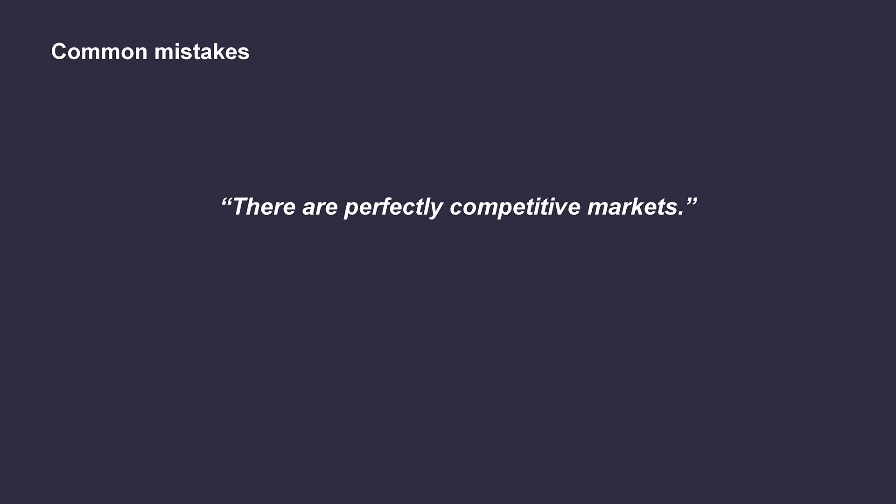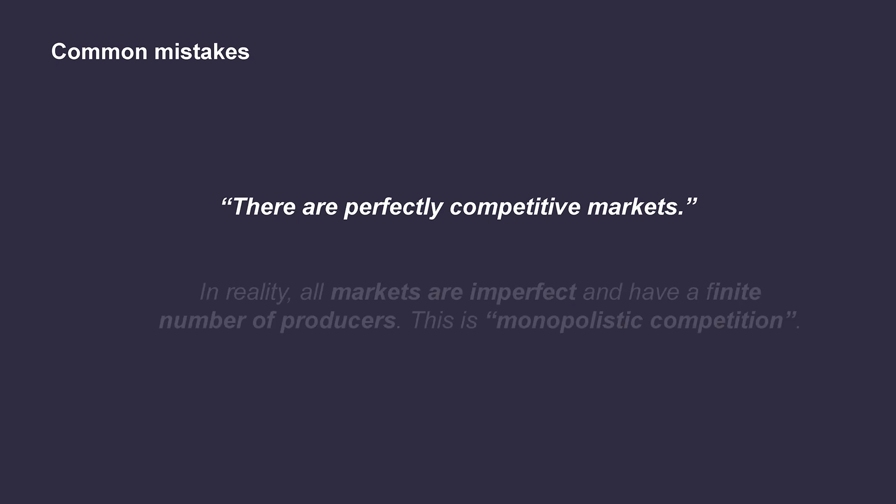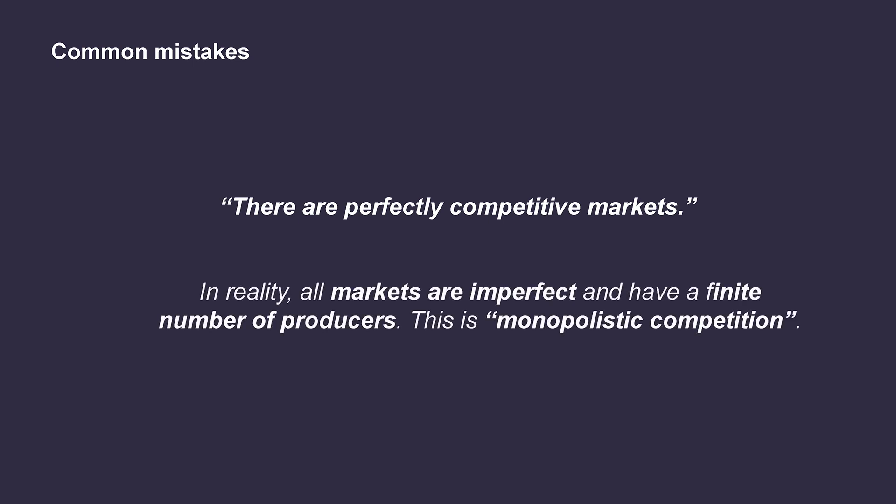This leads us to common mistakes made about market structures. First mistake: there are perfectly competitive markets. In reality, all markets are imperfect and have a finite number of producers. This is referred to as monopolistic competition.